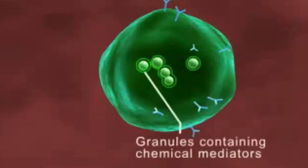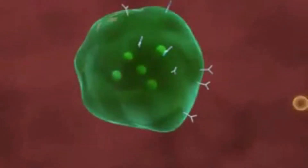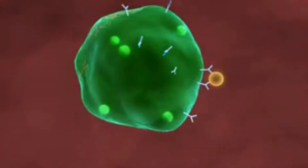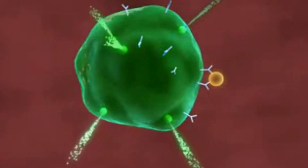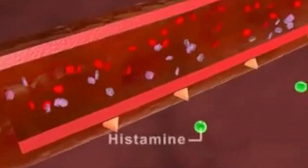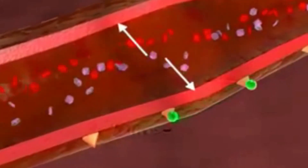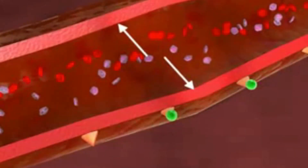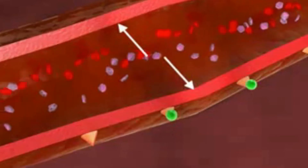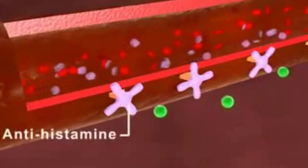The mast cells have granules containing chemical mediators like histamine and prostaglandin. On subsequent exposure, the allergen binds to the IgE antibodies present on the mast cells, cross-linking them. This results in the release of histamine, prostaglandin, and other mediators into the surrounding tissue. These mediators cause dilation of the surrounding blood vessels and increase their permeability, resulting in nasal stuffiness, sneezing, and mucous discharge of allergic rhinitis. Antihistamines work by blocking the action of histamine at its receptors, thus decreasing the body's reaction to the allergen.